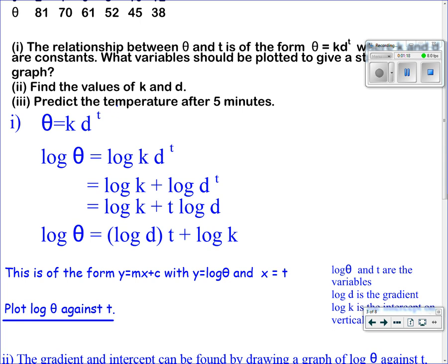The variables are log θ and t. Log d is the gradient and log k is the intercept on the vertical axis.